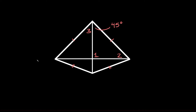What's up you freaking geniuses? So in this video I'm going to teach you how to find different angles within a kite. So here we have our kite and we're going to try and solve for these three unknown angles: one, two, and three.